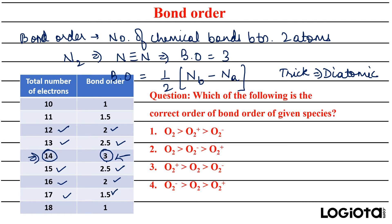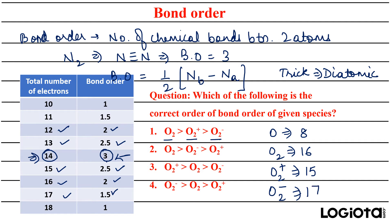Let's see an example: which is the correct order of bond order for O₂, O₂⁺, and O₂⁻? Oxygen has 8 electrons, so O₂ has 16 total electrons. O₂⁺ has lost one electron, giving 15, and O₂⁻ has gained one electron, giving 17.